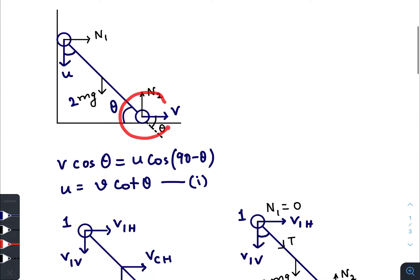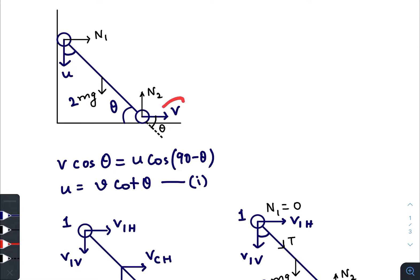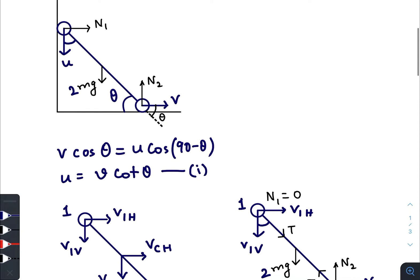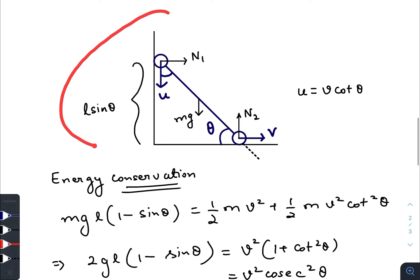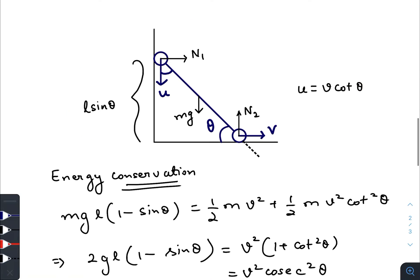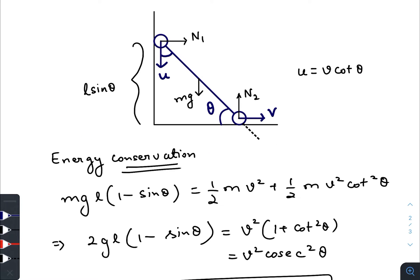The velocity of the lower mass was initially increasing, reaches a maximum after the upper ball loses contact, then its speed starts to decrease. So we just need to find the value of theta at which the speed of the lower ball is maximum. We express v in terms of theta and set dv/dθ = 0. We have drawn this diagram again and will use energy conservation since there is no friction.